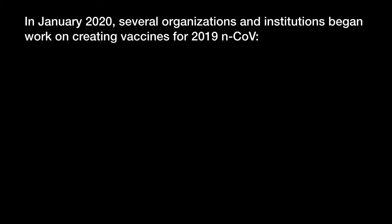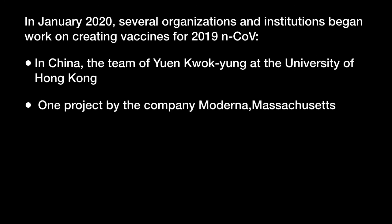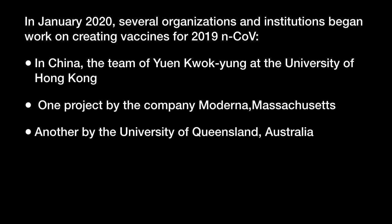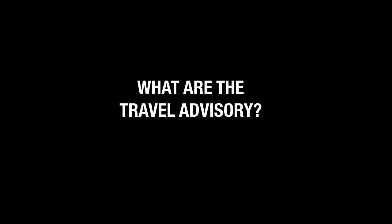In January 2020, several organizations and institutions began work on creating a vaccine for 2019-nCoV — in China, in Massachusetts, in Australia, and also in Canada. They are all actively working on developing a vaccine.